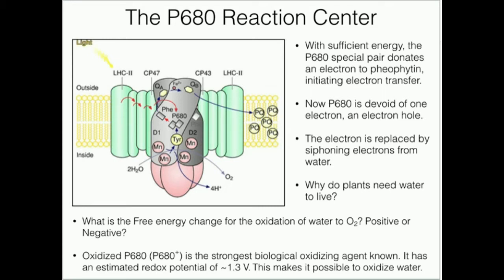The P680 reaction center contains what's called a special pair of chlorophyll molecules. The special pair consists of two chlorophyll molecules that are very, very close to one another — within angstroms of each other. That special pair of chlorophyll molecules plays a huge role in initiating the photosynthetic electron transport chain. The special pair is able to donate electrons, but only once it receives sufficient energy, ultimately from UV light from the Sun.